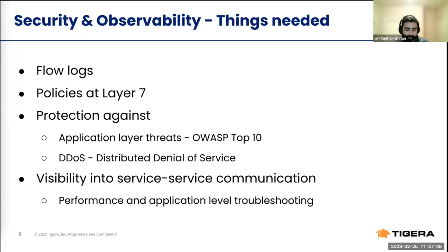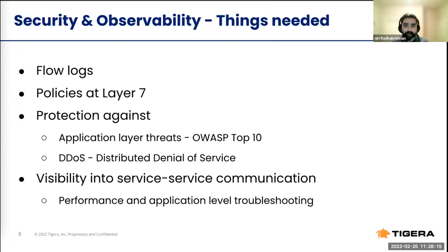OWASP — the Open Web Application Security Project — is a nonprofit community that maintains a list of the top 10 application layer threats, which they refresh every year. I'd encourage you to visit that website and understand what these attacks mean. I think I have a couple of questions — let me take a break and look at them. One person is asking: to what extent is AI implemented to provide a solution for proactive issues?